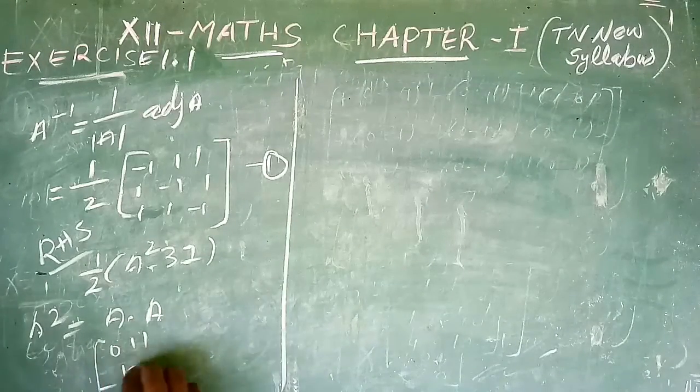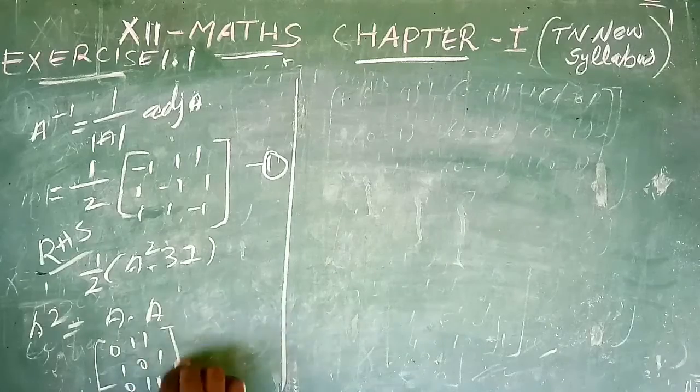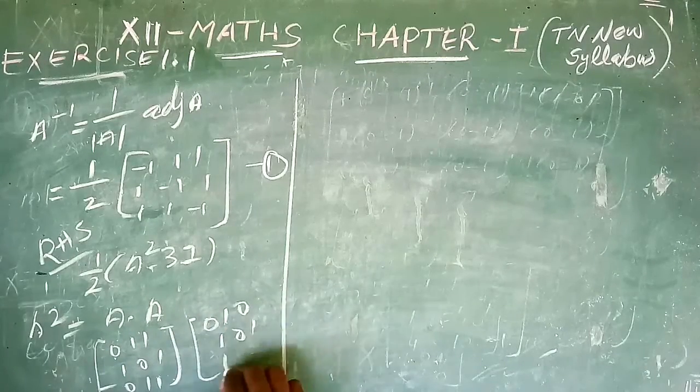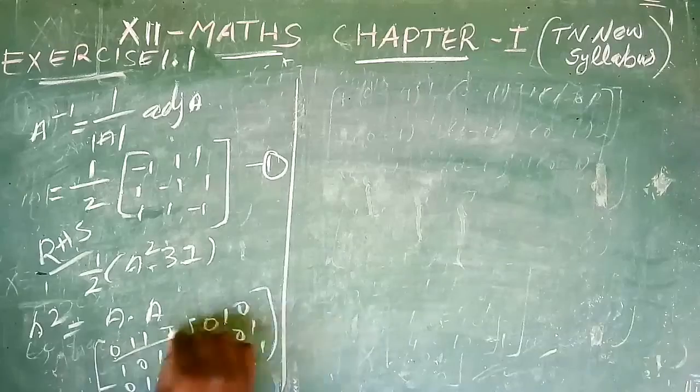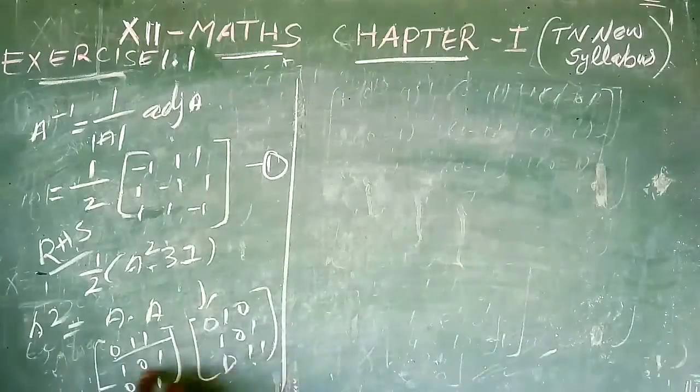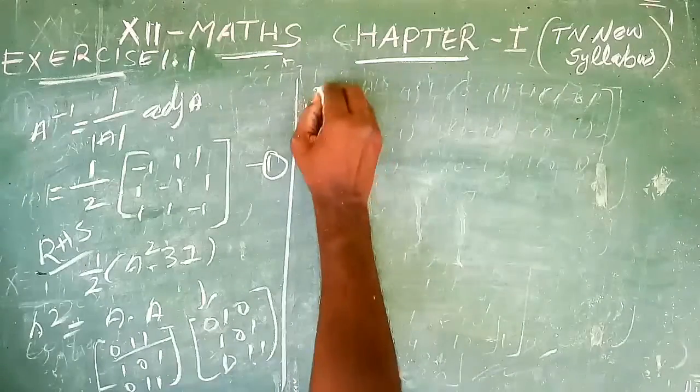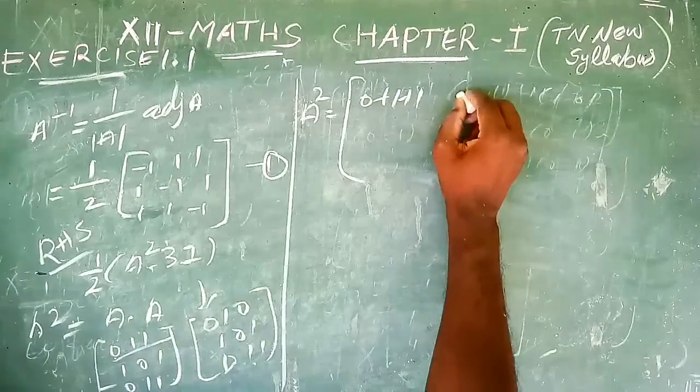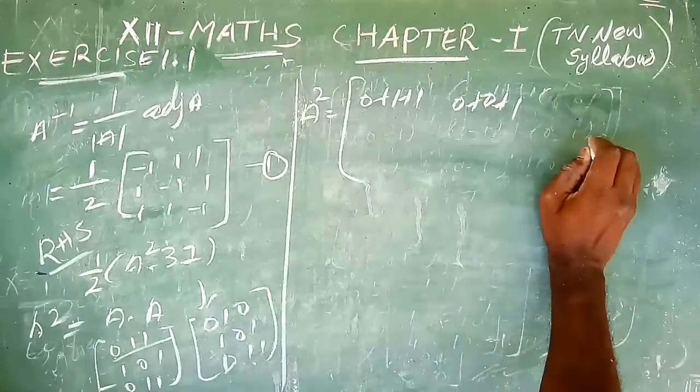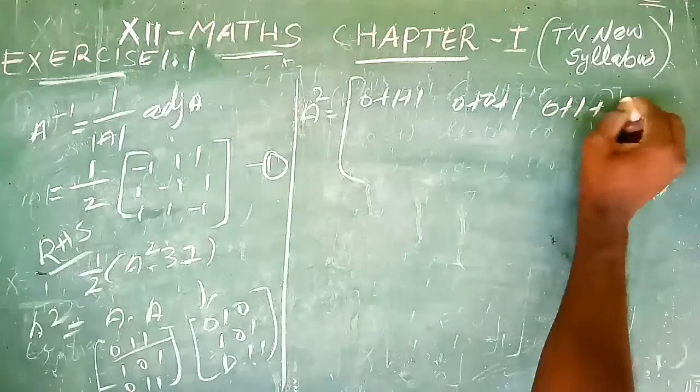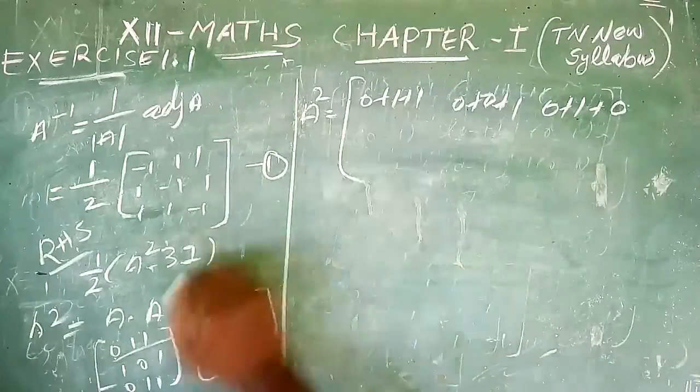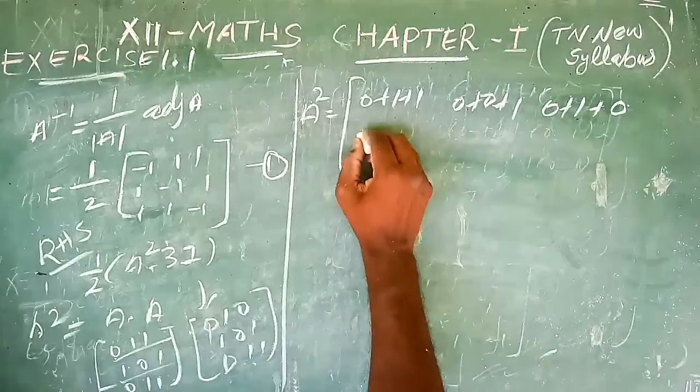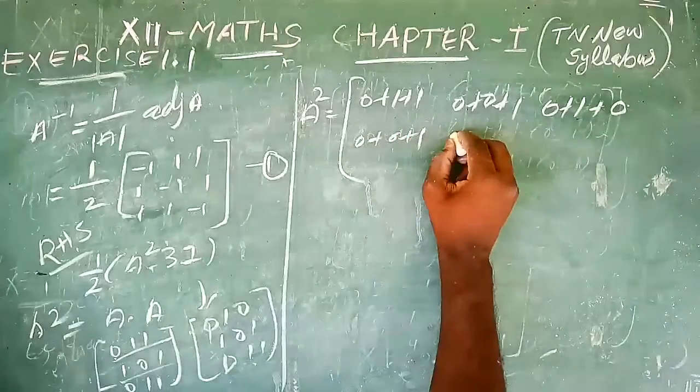For A², we multiply A by itself. The matrix is [0, 1, 0; ...]. We perform row-column multiplication: first row with first column, first row with second column, first row with third column, and so on through all positions.